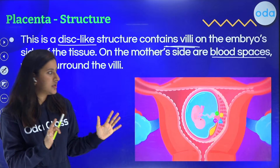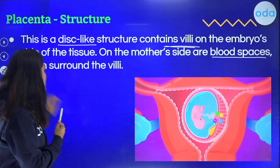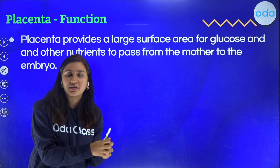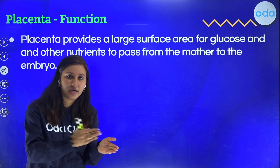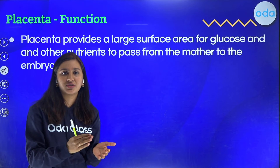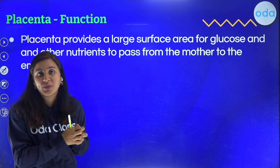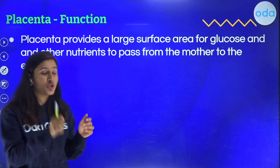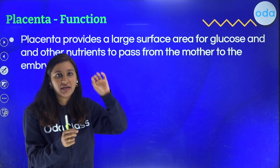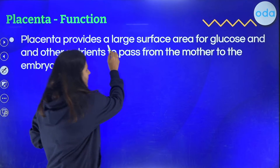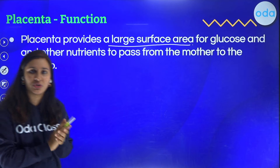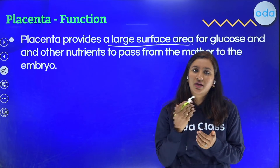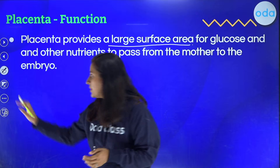The function of the placenta: it is the organ that connects the baby and the mother during pregnancy. Everything the baby requires — nutrients and oxygen — comes through the placenta. The disc-shaped structure provides a large surface area for the exchange of nutrients like glucose, amino acids, etc., enabling all the nutrition the baby requires.